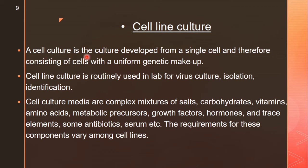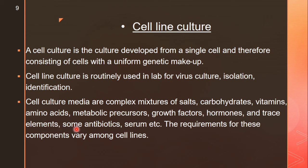The third type is cell line culture. A cell culture is developed from a single cell and therefore consists of cells with a uniform genetic makeup. Cell line culture is routinely used in the lab for virus culture, isolation, and identification. Cell culture media are complex mixtures of salts, carbohydrates, vitamins, amino acids, metabolic precursors, growth factors, hormones, trace elements, some antibiotics, and serum.